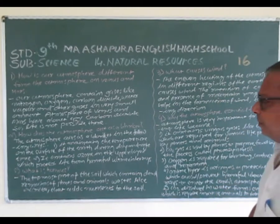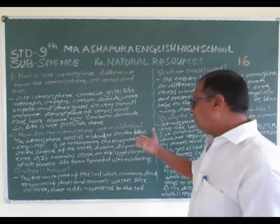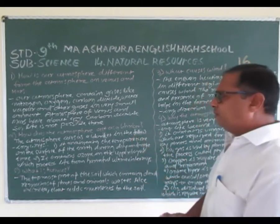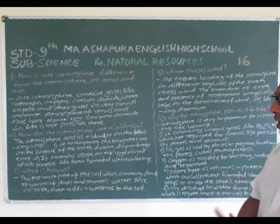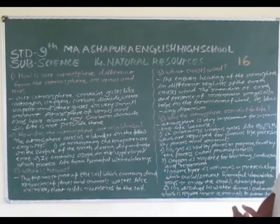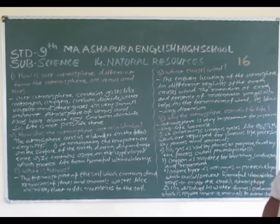Second question: How does the atmosphere act as a blanket? Atmosphere acts as a blanket in the following ways. First, it maintains the temperature on the surface of the Earth during the day and night time.